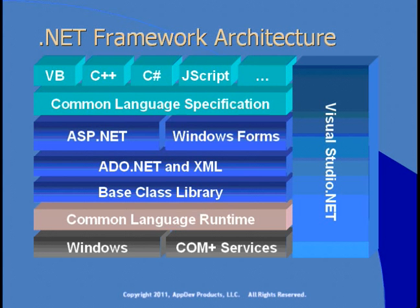If we look at the .NET architecture diagram, at the bottom is Windows and COM+ Services, indicating that all this still sits on top of Windows. There are versions of the .NET framework running on other platforms — there are initiatives to cross-port .NET to Linux, to the Mac, and so on. In this course, we'll focus on Microsoft technologies and Windows. On top of Windows sits the Common Language Runtime, a set of services that provide all the features we'll use when running .NET applications.